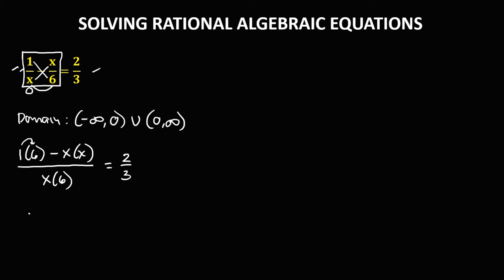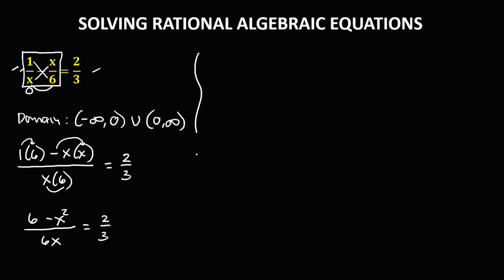Simplifying: 1 times 6 is 6, then negative x times x is negative x squared, over x times 6, which is 6x, equals 2 over 3.